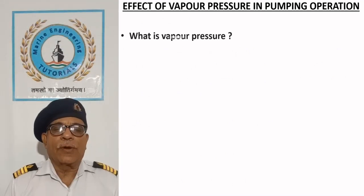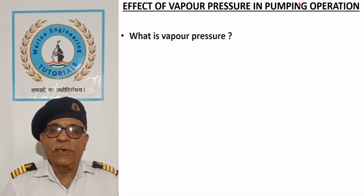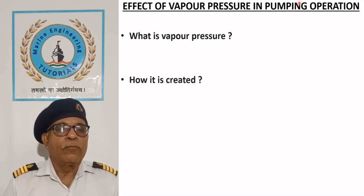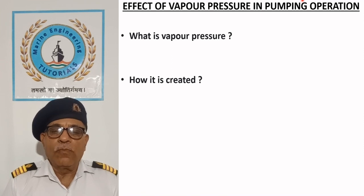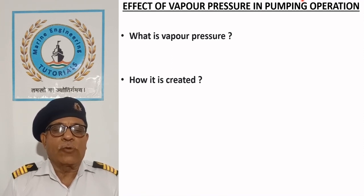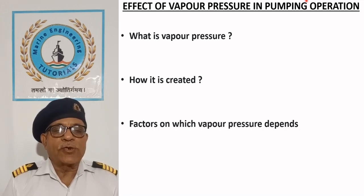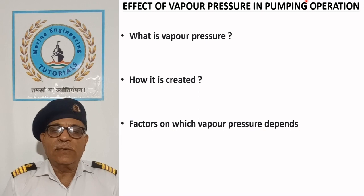What is vapor pressure? Vapor pressure is defined as the pressure exerted by vapors when they are in equilibrium with the liquid phase at a given temperature. When a liquid is heated, it begins to boil and the vapors produced exert pressure on the surface of the liquid. Vapor pressure depends on the nature of the liquid and its temperature.